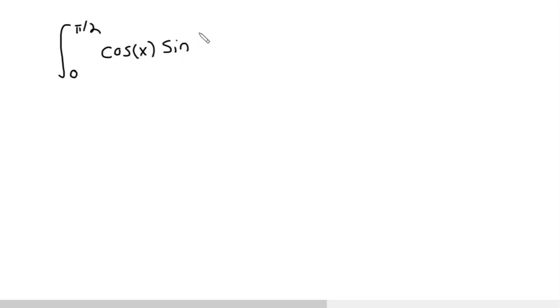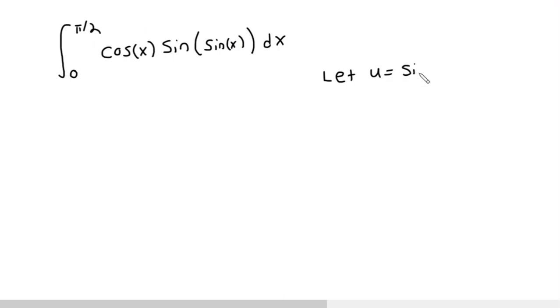So let's say I had the integral from 0 to pi/2 of cosine x times sine(sine x) dx. I want to pick my u so that the derivative of it is somewhere in this integral. So I'm going to pick u equals sine x. Usually it's what's inside of another function — I have a sine x inside of another sine, so it's the inner function of a composition. That's a pretty good candidate.